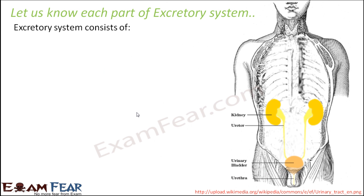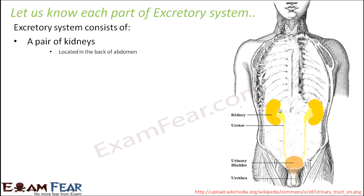Now let us start with the kidneys. A pair of kidneys are located in the back side of the abdomen, in the abdominal cavity just below the thoracic cavity.